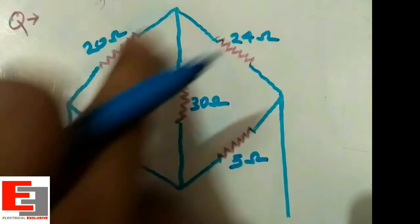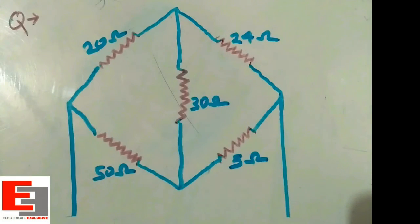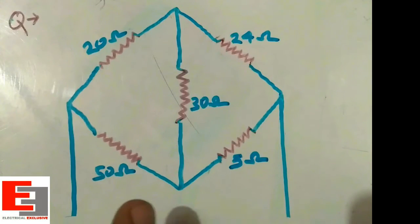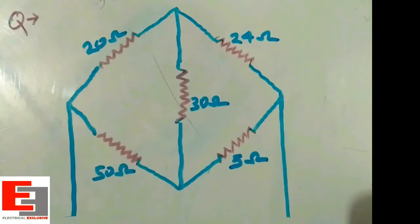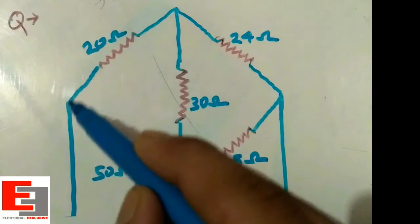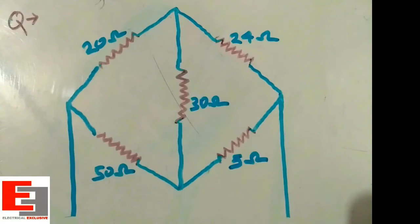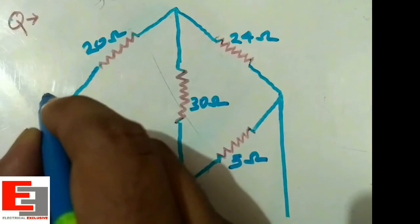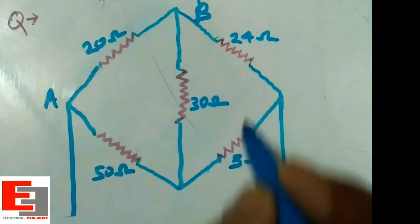This circuit contains two deltas — this one is a delta and this one is another delta. That's why this circuit can't be solved by using series and parallel circuit rules. So all we have to do is transform one of these two deltas into its star equivalent. In this question I shall convert this delta into its star equivalent.